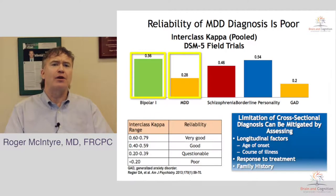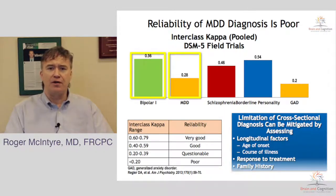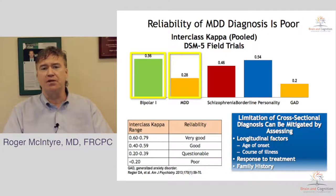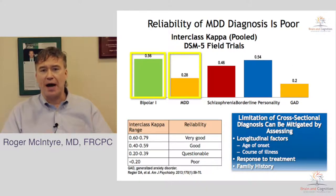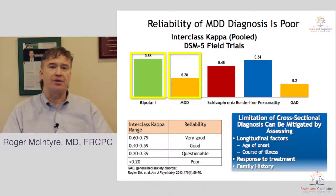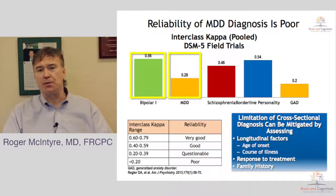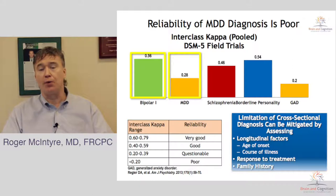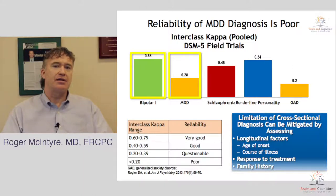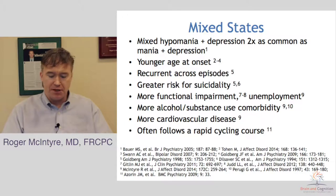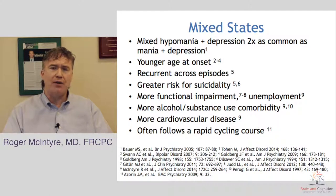This is, in many ways, a lot like Kraepelin described — the dimensionalization of the phenomenology of mixed features, where you fit along these dimensions really depends on how many symptoms you have. We learned from the DSM-5 field trials that the more depressed people are when they present to health care providers, the more likely we're going to have difficulty making the diagnosis. The inter-observer agreement for major depressive disorder in DSM-5 was 0.28, for bipolar 2 it was 0.40, and bipolar 1 was 0.56.